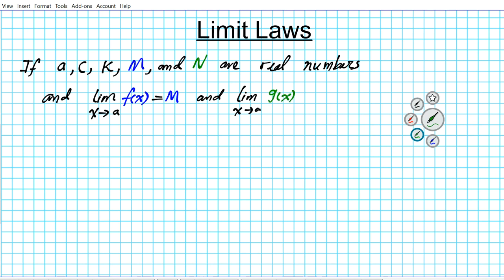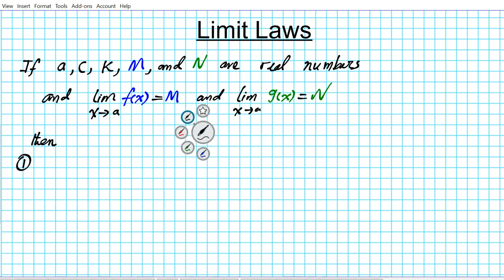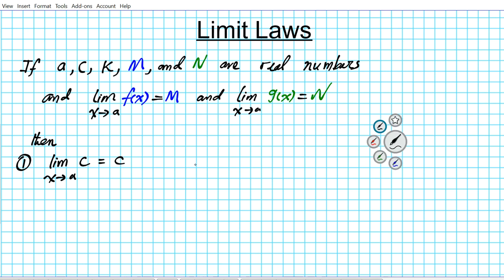Given those conditions, we have the following laws. Number one: the limit as x approaches a of the constant c is equal to c. This is known as the constant rule. It makes sense because the function's output is constant and independent of what x does — so whatever x does, the function always has the same output value.